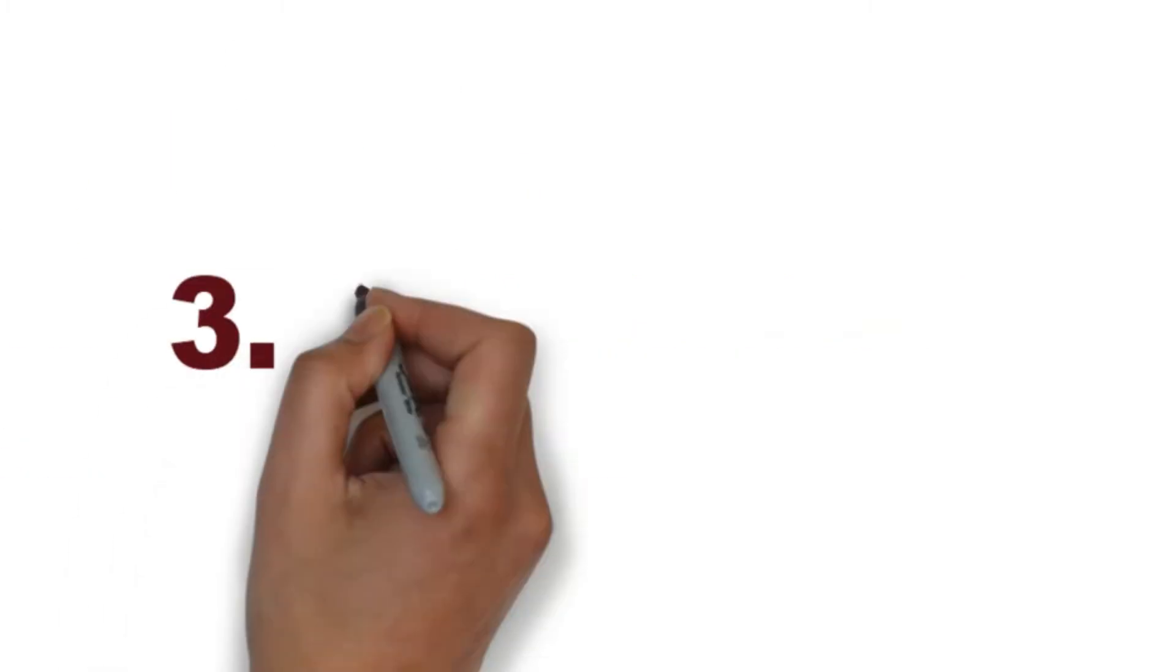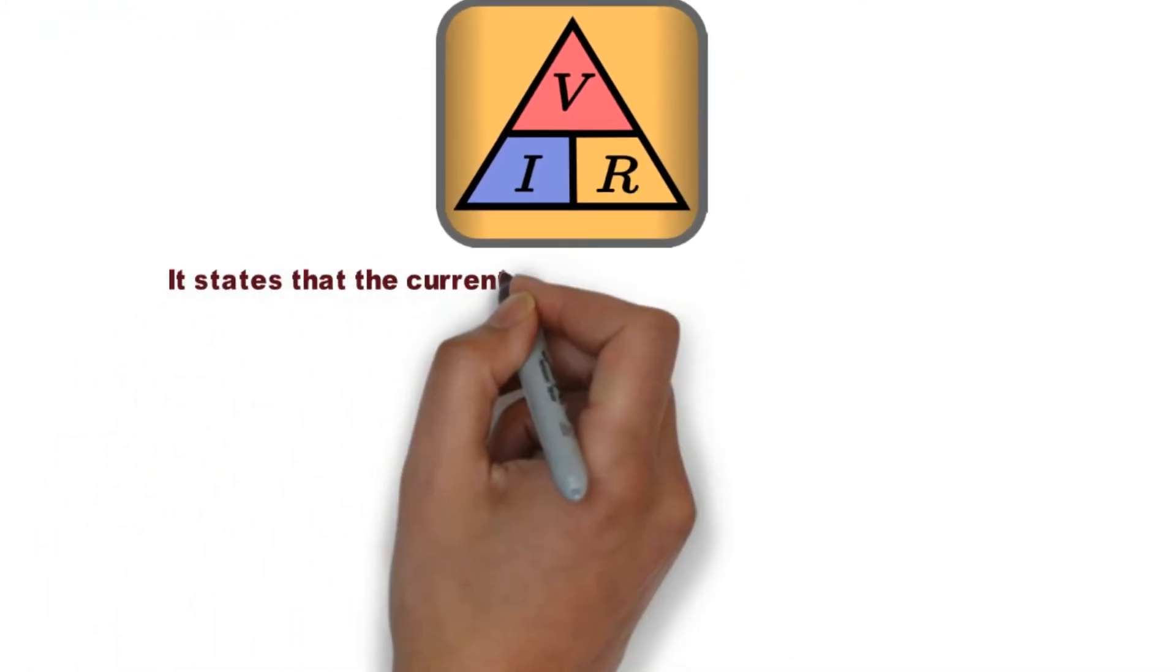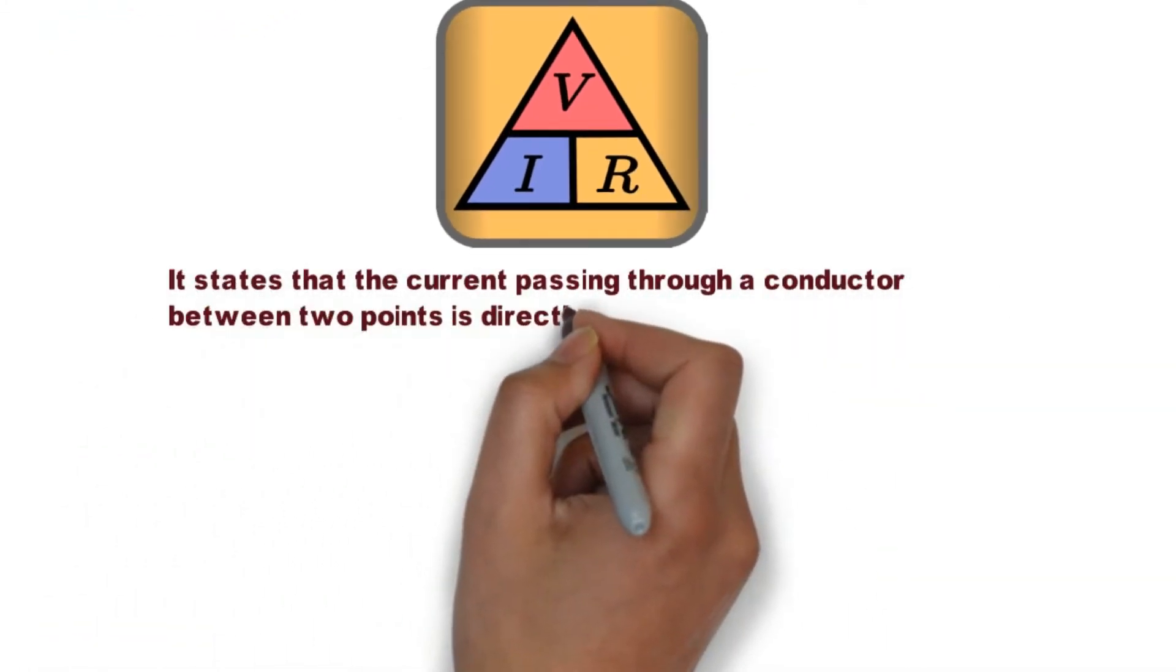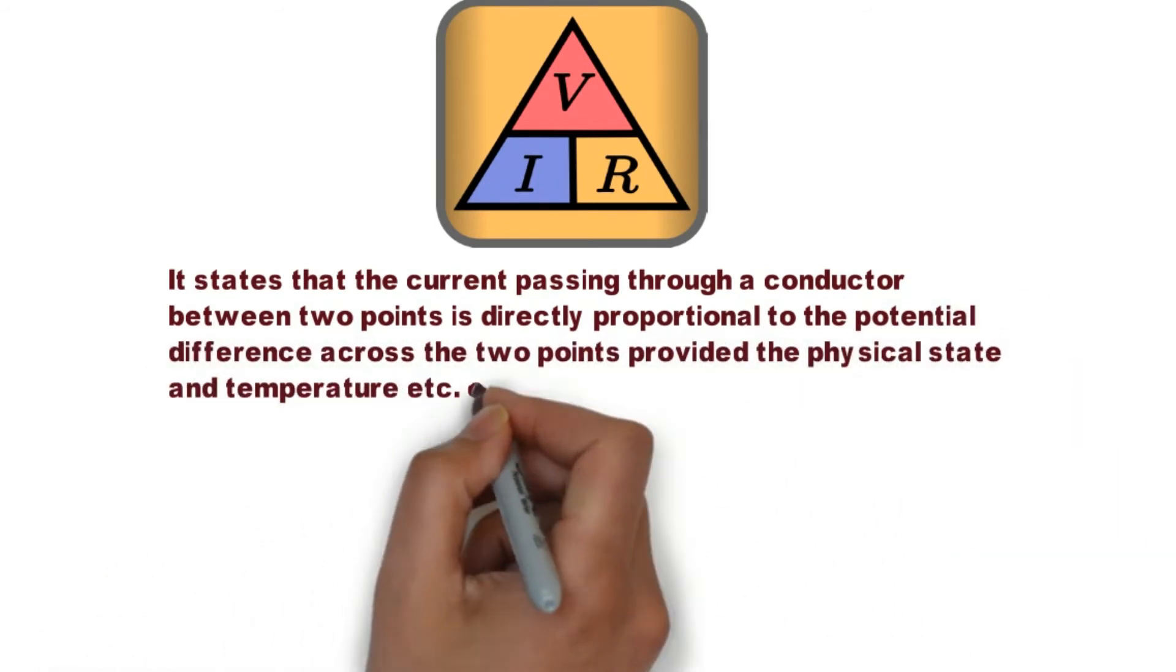3. Ohm's Law. It states that the current passing through a conductor between two points is directly proportional to the potential difference across the two points, provided the physical state and temperature of the conductor does not change.